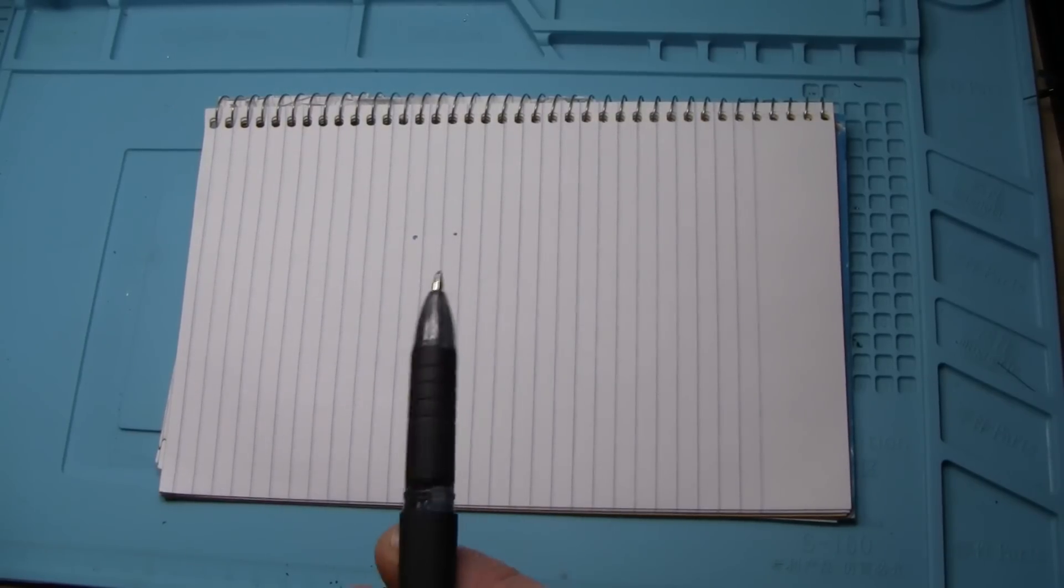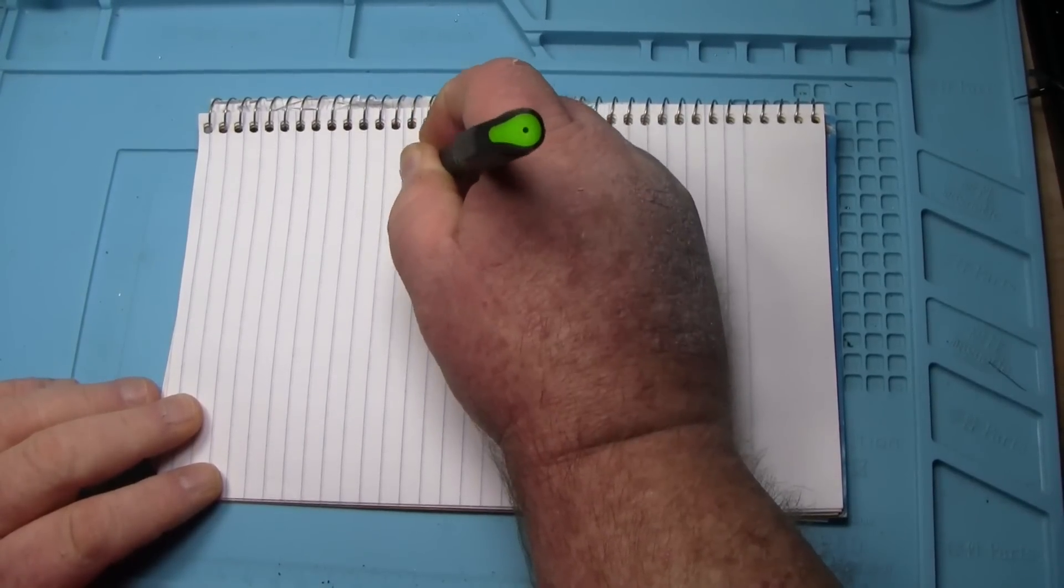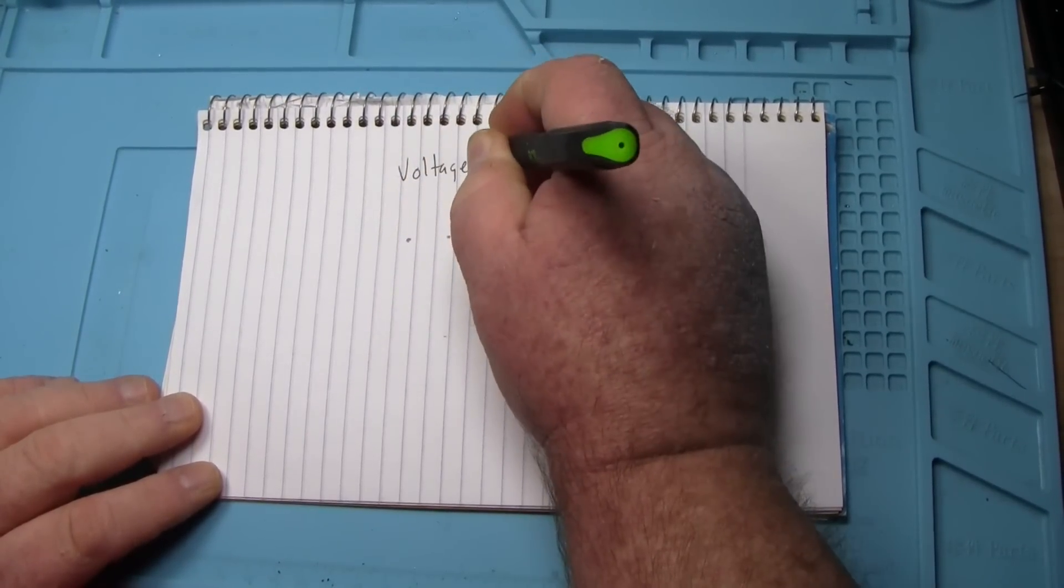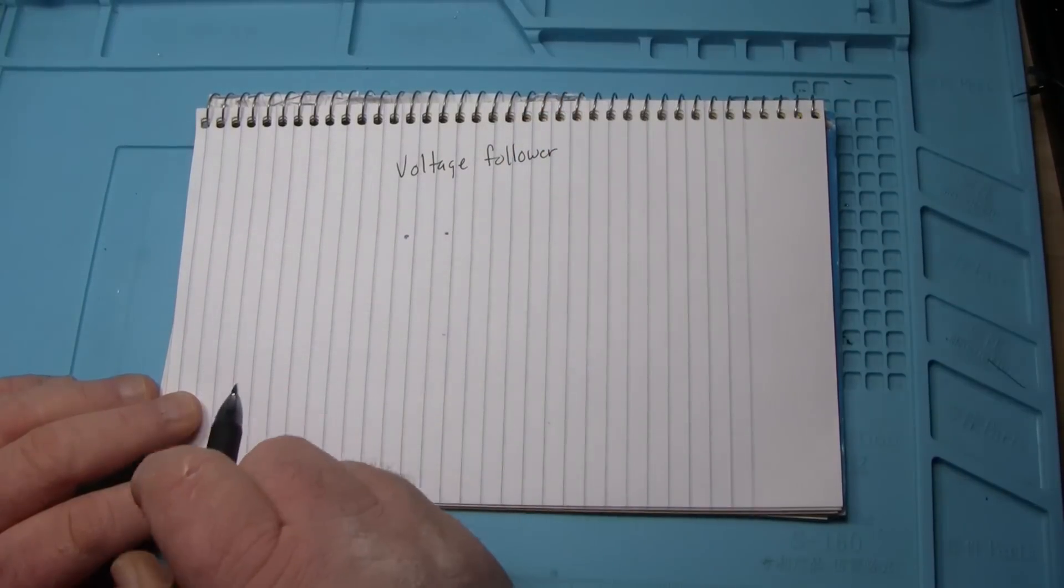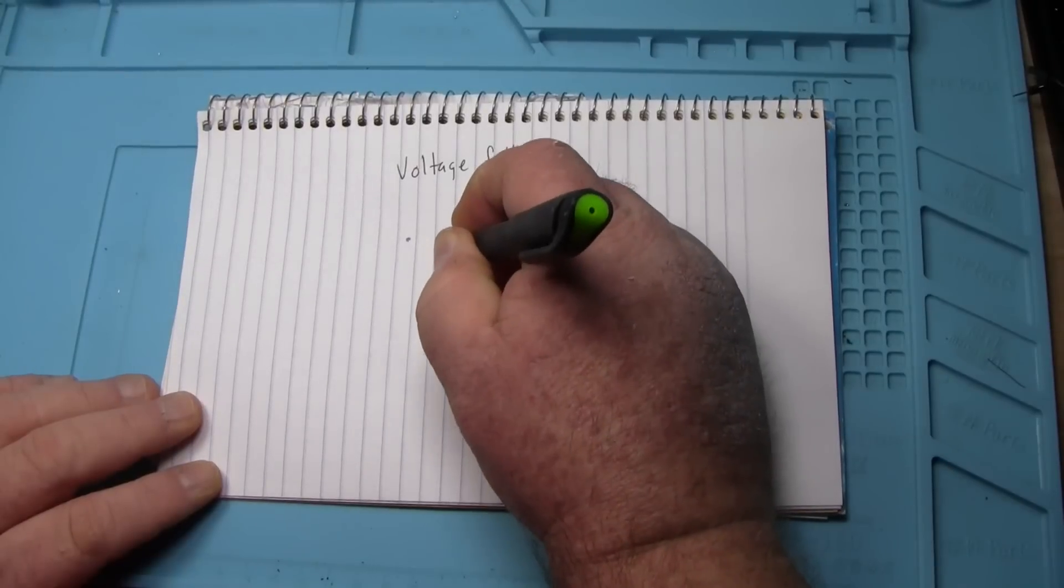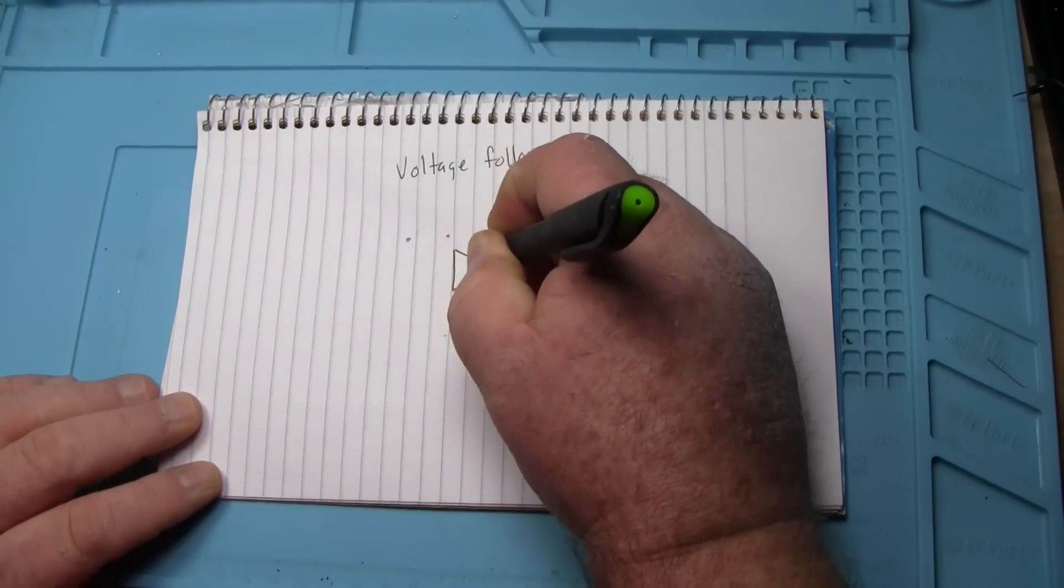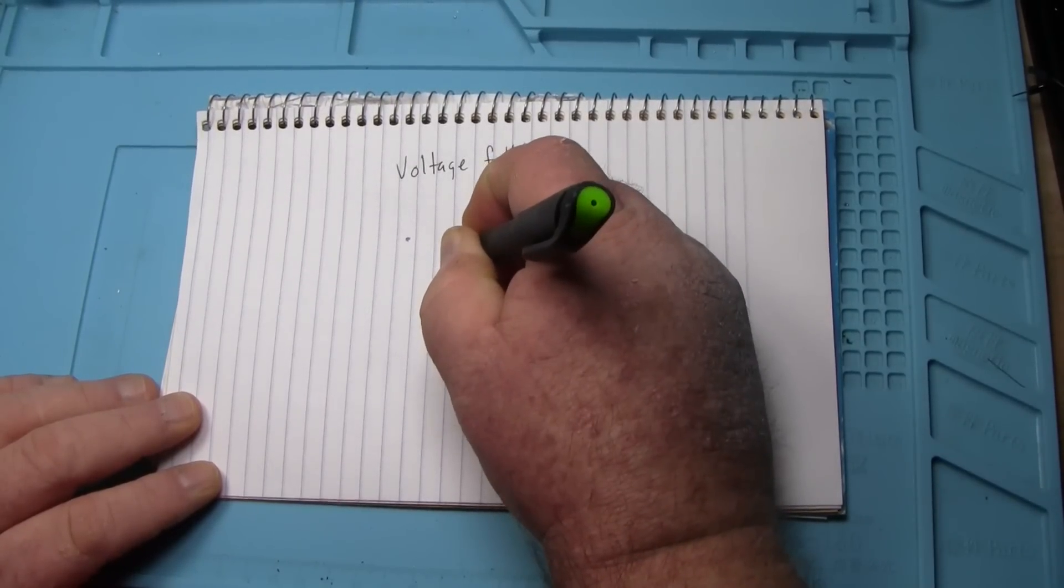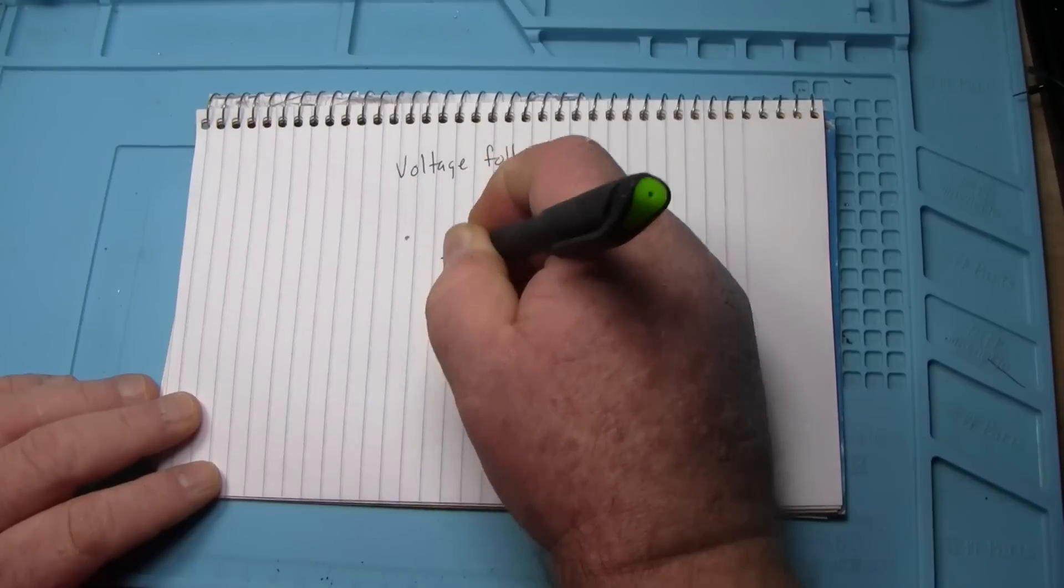Hey what's happening guys, today we're going to talk about another classic circuit you should know and that is the voltage follower. We build it using an op-amp so we have our inverting input and our non-inverting input.